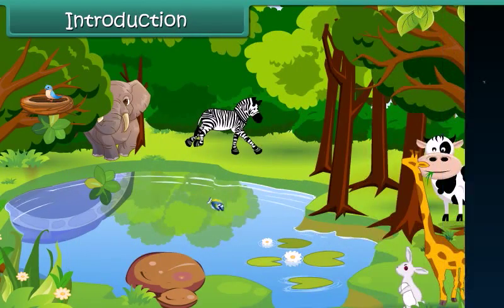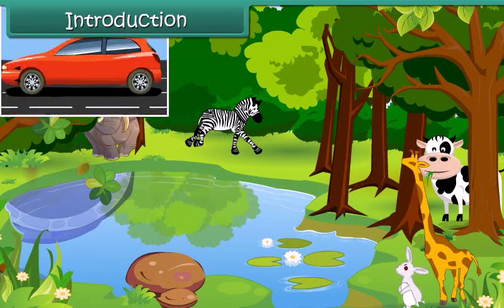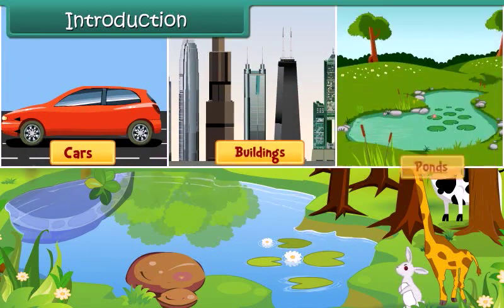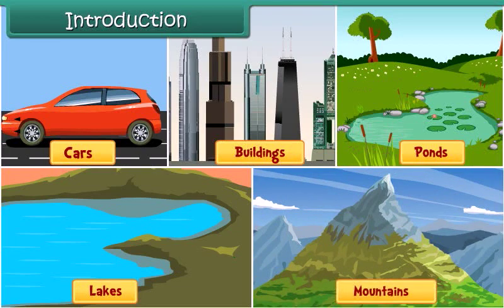We see living things such as trees, animals, as well as non-living things like cars, buildings, ponds, lakes and mountains around us. All these things are found on our planet Earth. In this module, you will learn about the Earth and what it consists of.